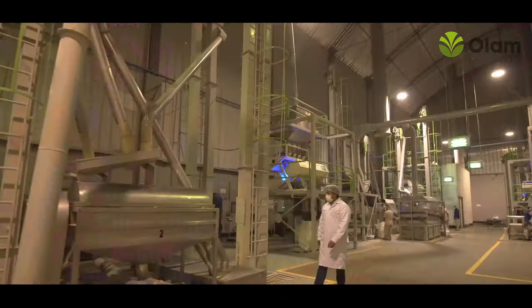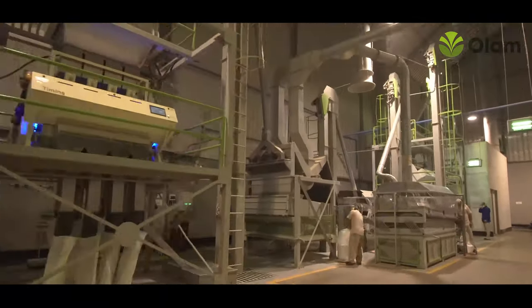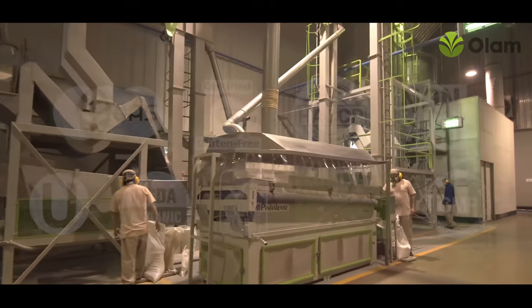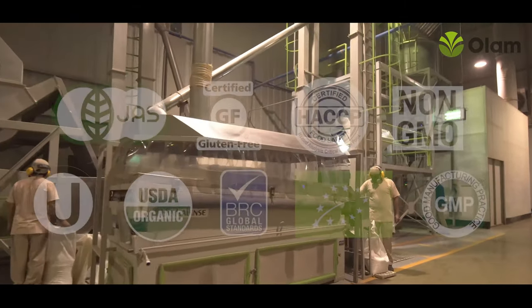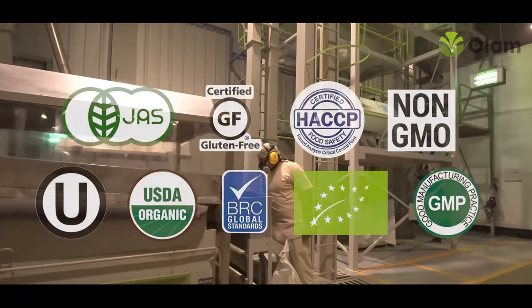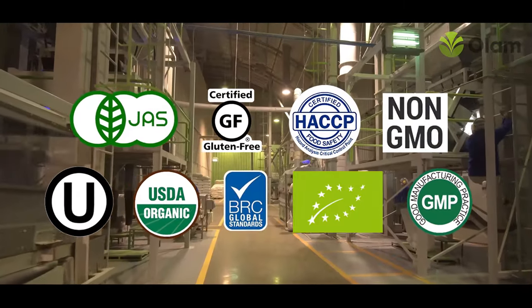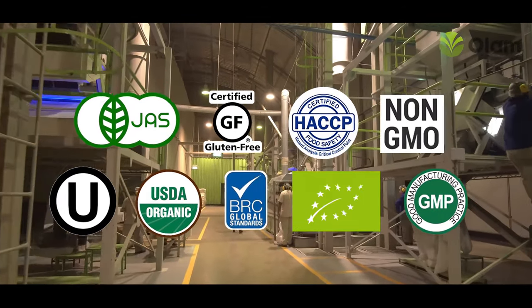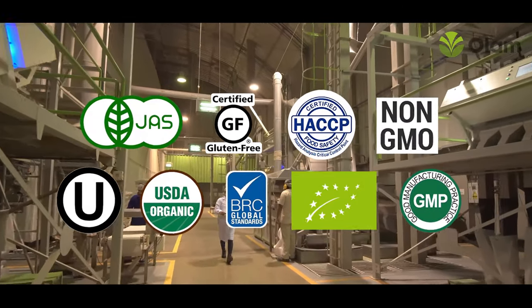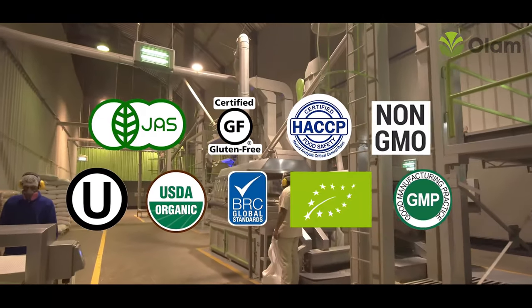Our processing plant has the following quality certifications: BRC version 8 AA, HACCP and GMP. Organic certifications: USDA NOP, EU 834-2007, JAS, and local Peruvian technical regulations for organic products. Other certifications: Kosher and gluten-free. Social certifications: Ecosocial, Fairtrade, and SMETA.